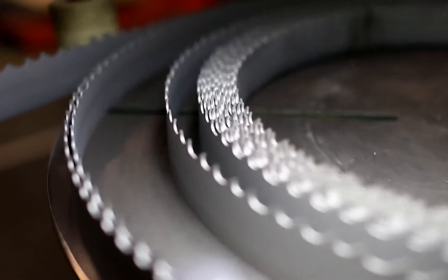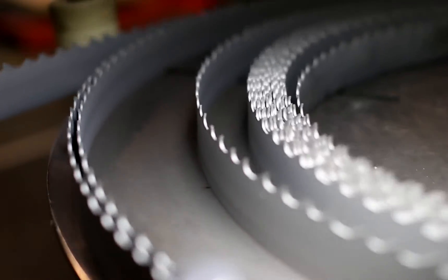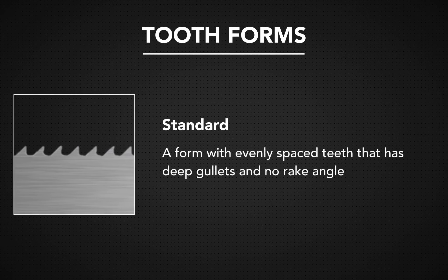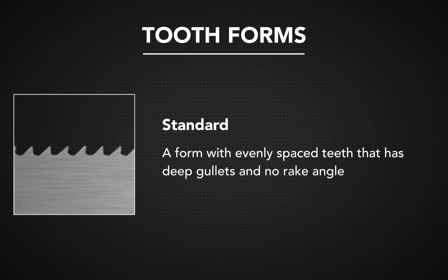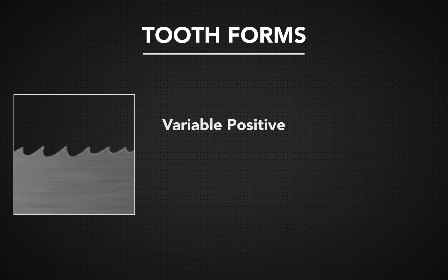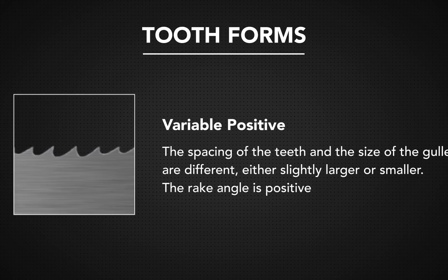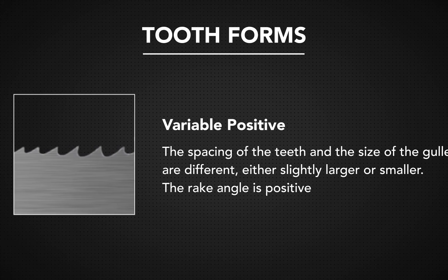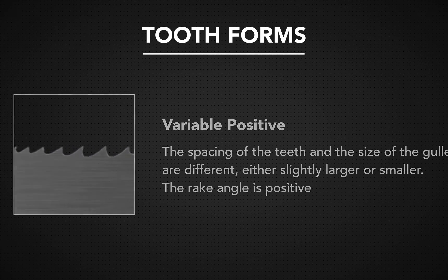There are typically a few common ones that can be found anywhere. They include Standard, a form with evenly spaced teeth that has deep gullets and no rake angle. Variable Positive, where the spacing of the teeth and the size of the gullet are different, either slightly larger or smaller, and the rake angle is positive.